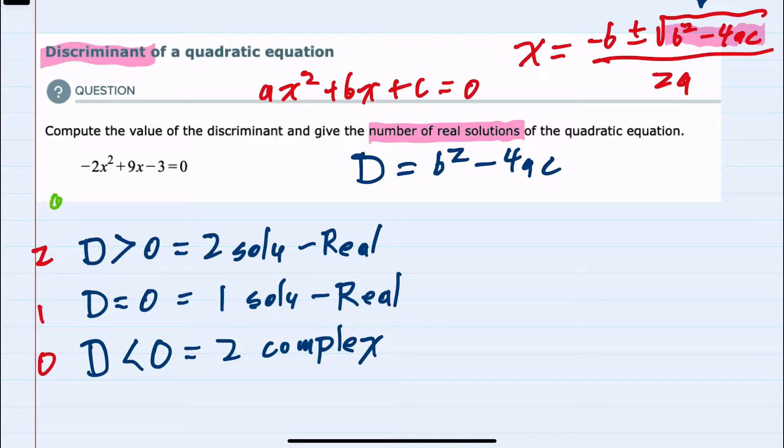And for this example, we have an a of negative 2, a b of 9, and a c of negative 3. Substituting in to find the discriminant, we have D equals b squared. B is 9, so 9 squared would give us 81, minus 4 times a, which is negative 2, times c, which is negative 3.